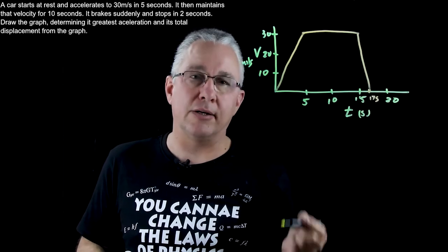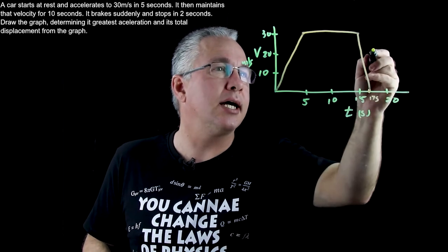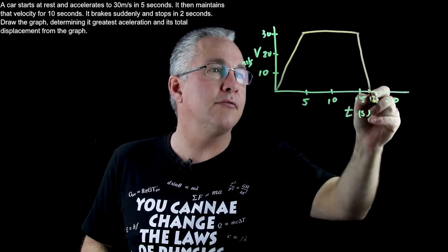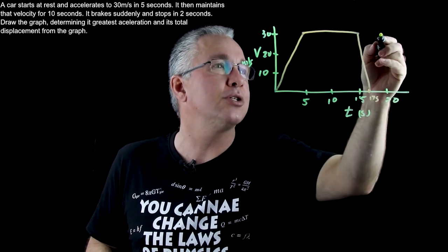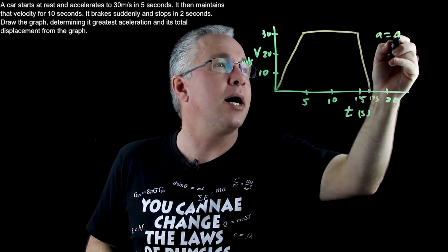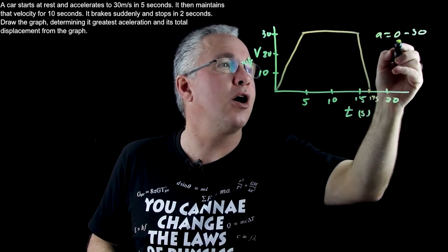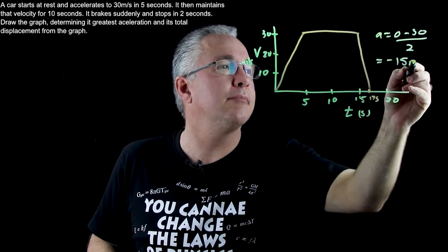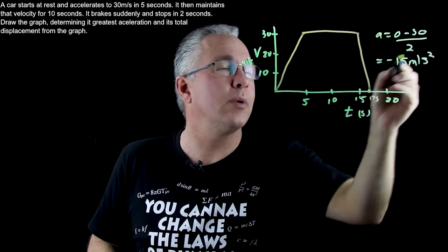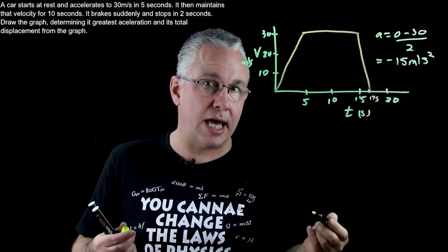So now let's work out our acceleration in this section and our acceleration is simply the rise over run of this section so we go final minus initial which is 0 minus 30 over the time which is 2 which gives us negative 15 meters per second squared. So now that gives us our acceleration.